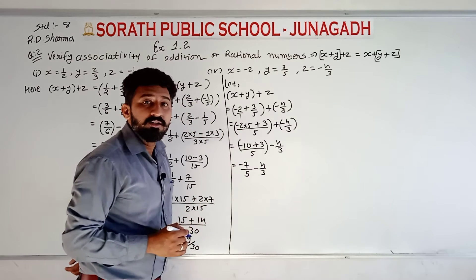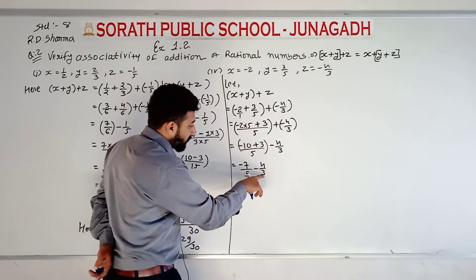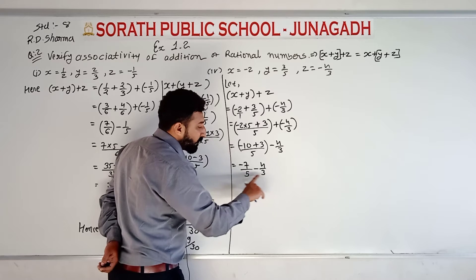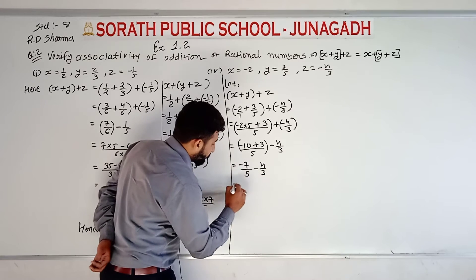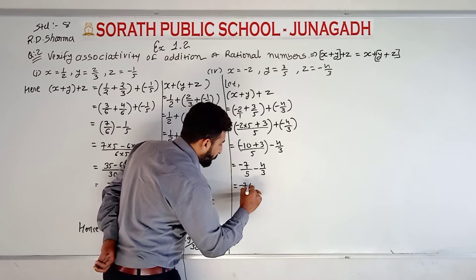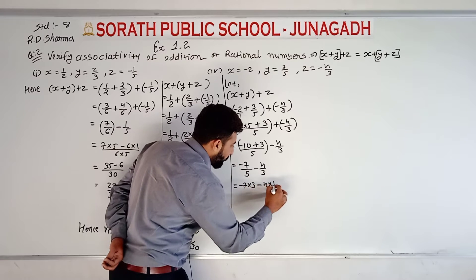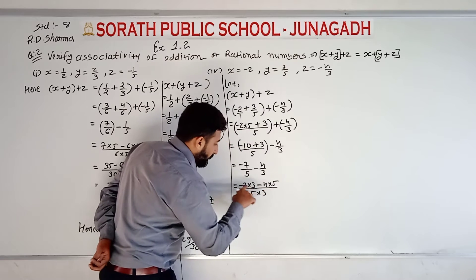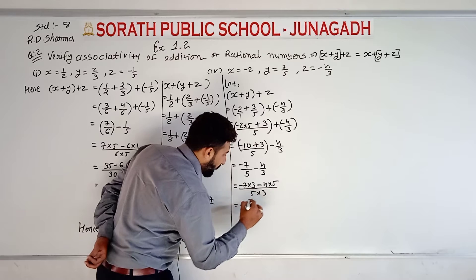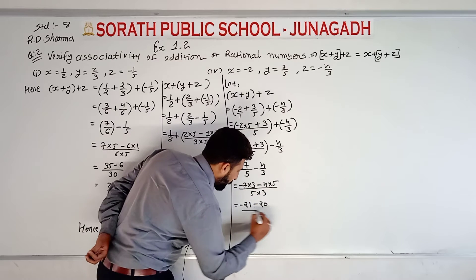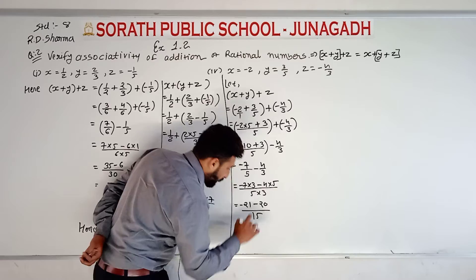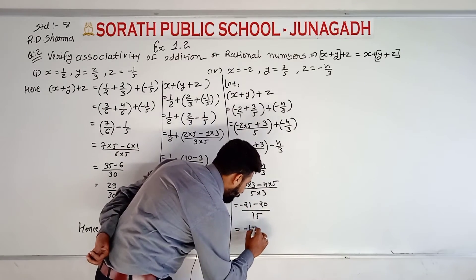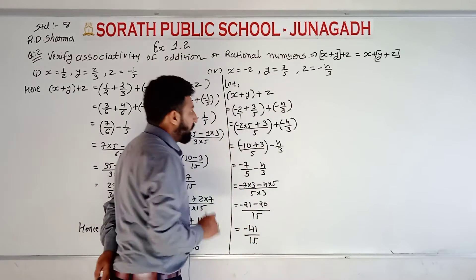Now again we take cross multiplication: 3 is multiplied by 7 and 5 is multiplied by 4, and both denominators multiply with each other. Minus 7 multiplied by 3, minus 4 multiplied by 5, denominator 5 multiplied by 3. Seven threes are twenty-one, minus five fours are twenty, upon fifteen. Same sign addition: twenty-one and twenty give forty-one. So minus 41 upon 15 is our answer.